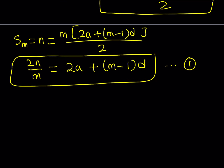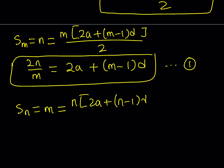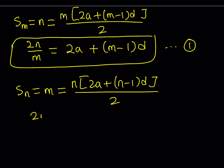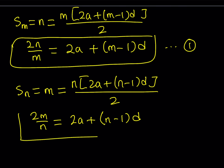By the same idea, we can write S sub N, which equals M — and remember M and N are different. That can be written as N times the quantity 2A plus N minus 1 times D, all over 2. Simplifying the same way gives us 2M over N equals 2A plus N minus 1 times D. Let this be equation number 2.